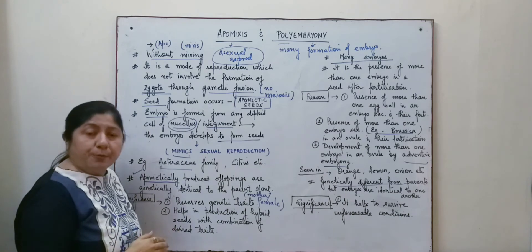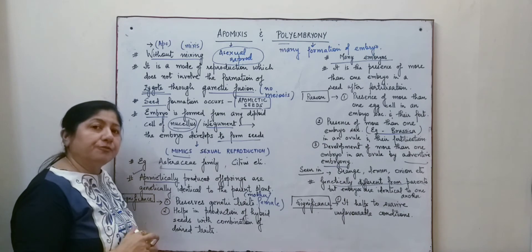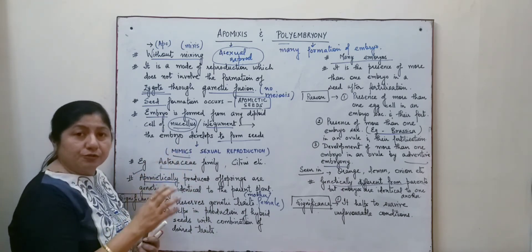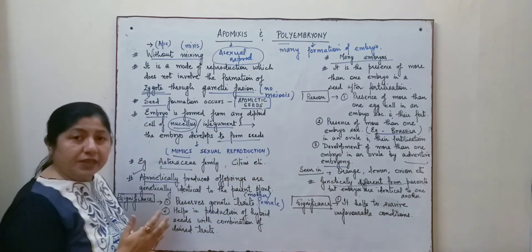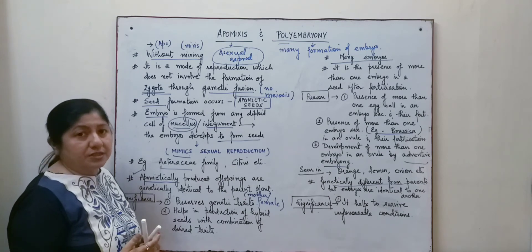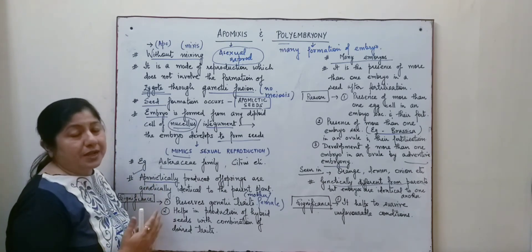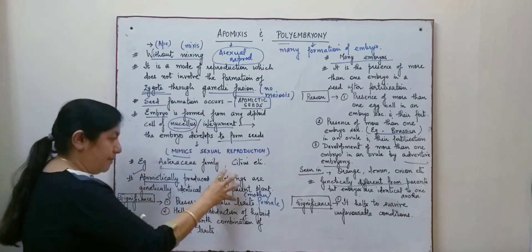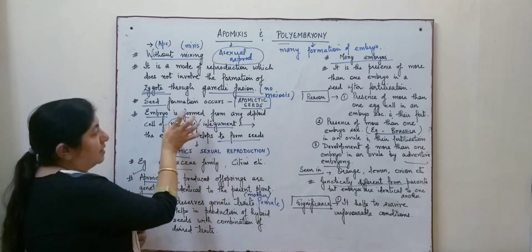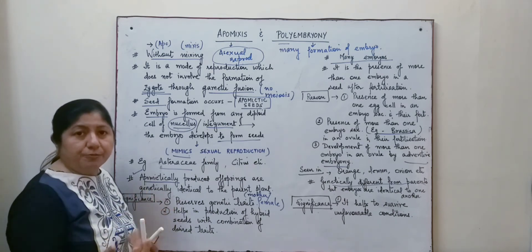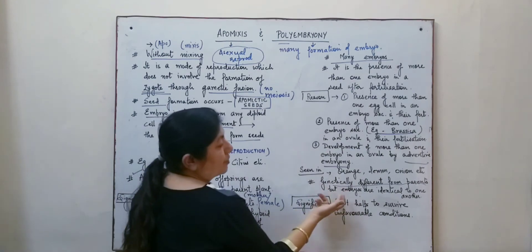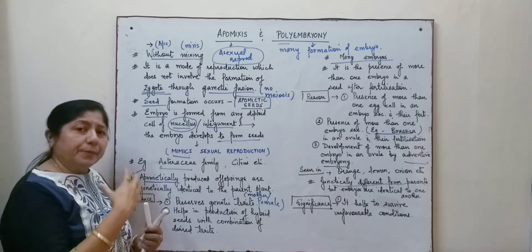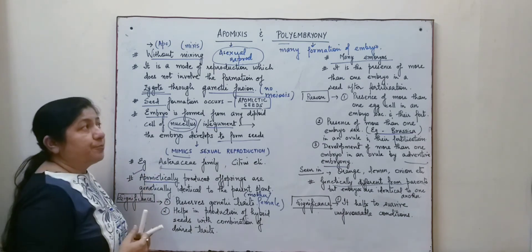The major difference between apomixis and polyembryony is that in apomixis, there is no formation of gametes and no fusion of gametes, whereas in polyembryony, actual formation of gametes takes place and the fertilization process happens. A second important difference is that in apomixis, the offspring are identical to the female parent plant because the embryo develops from a diploid cell of the embryo sac. In polyembryony, the embryos are identical to one another but genetically different from the parents due to fusion of male and female gametes.